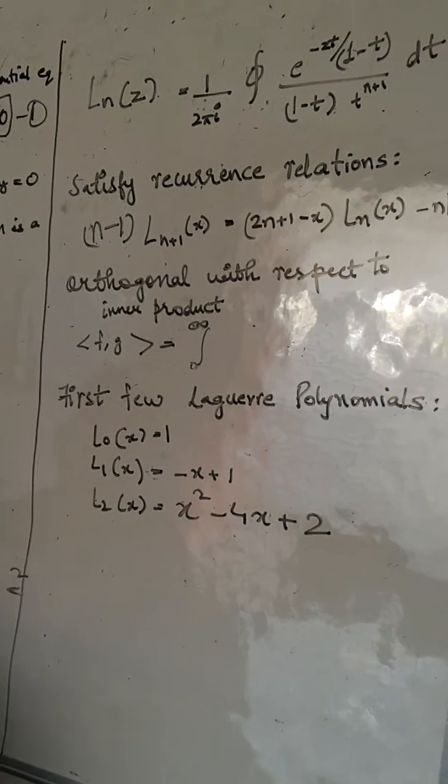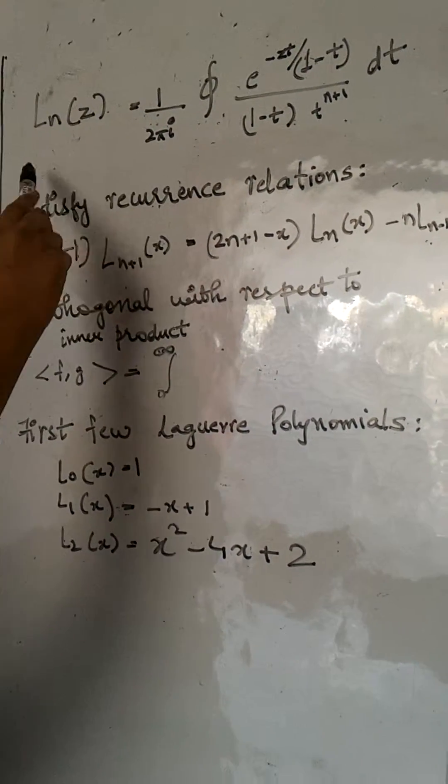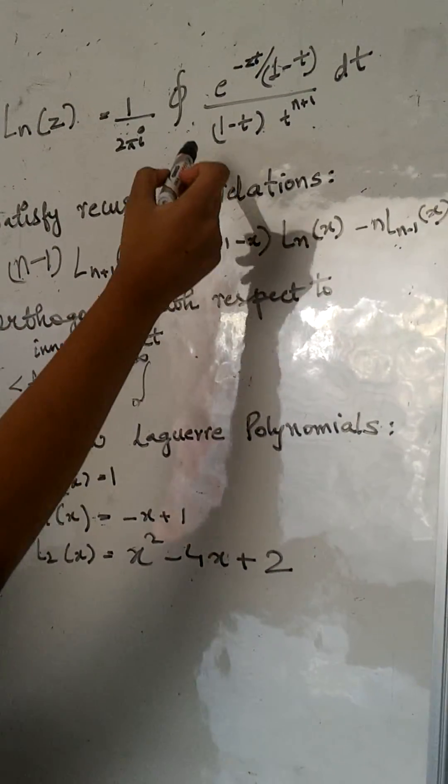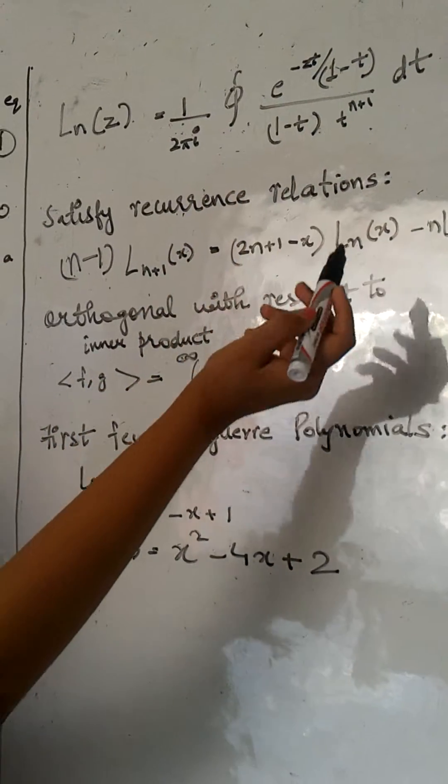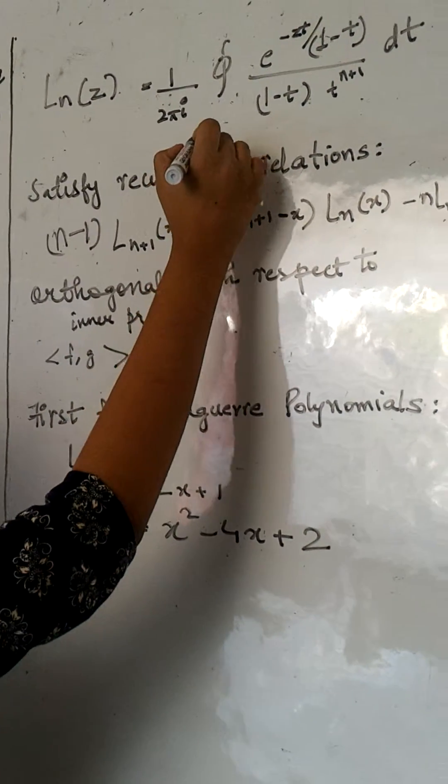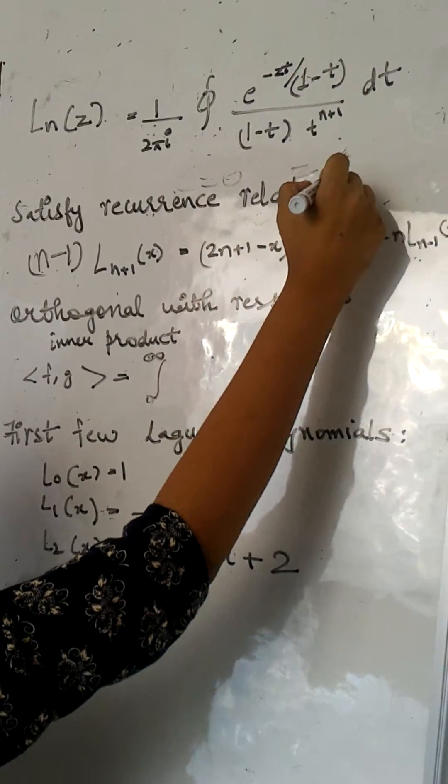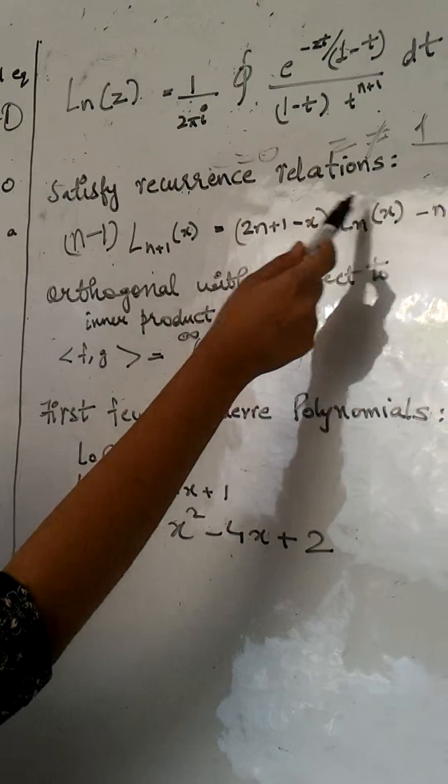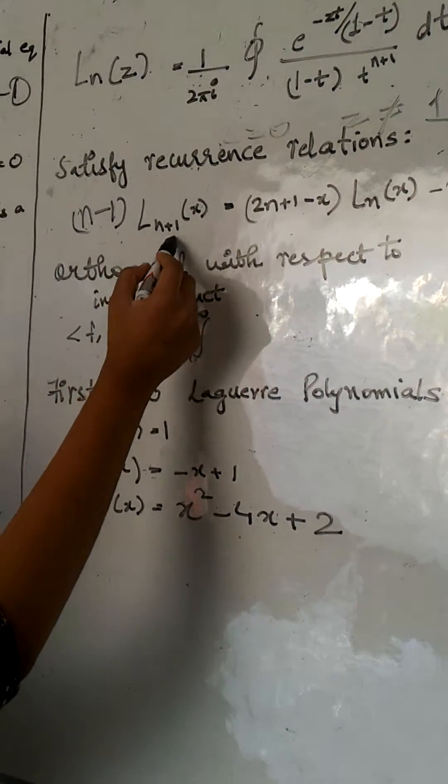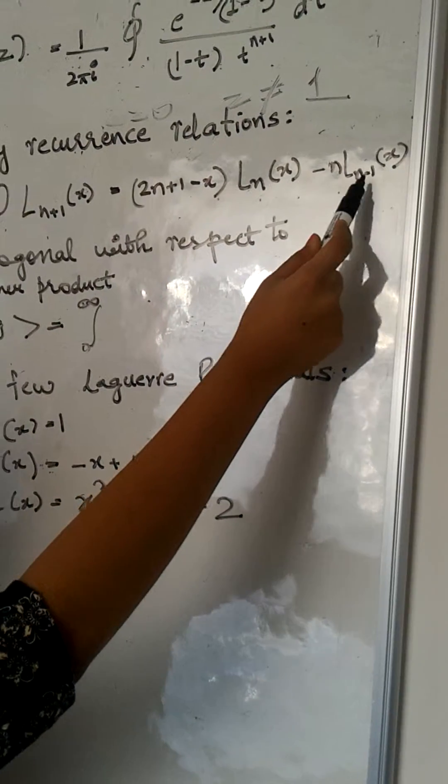Coming to the contour integral definition of Laguerre polynomials, it is given by L_n(x) equals to 1/(2πi) times this contour integral which is defined over all the region including z equals to 0 and excluding z equals to 1. And they satisfy recurrence relations: (n-1)L_{n+1}(x) equals to (2n+1-x)L_n(x) minus nL_{n-1}(x).